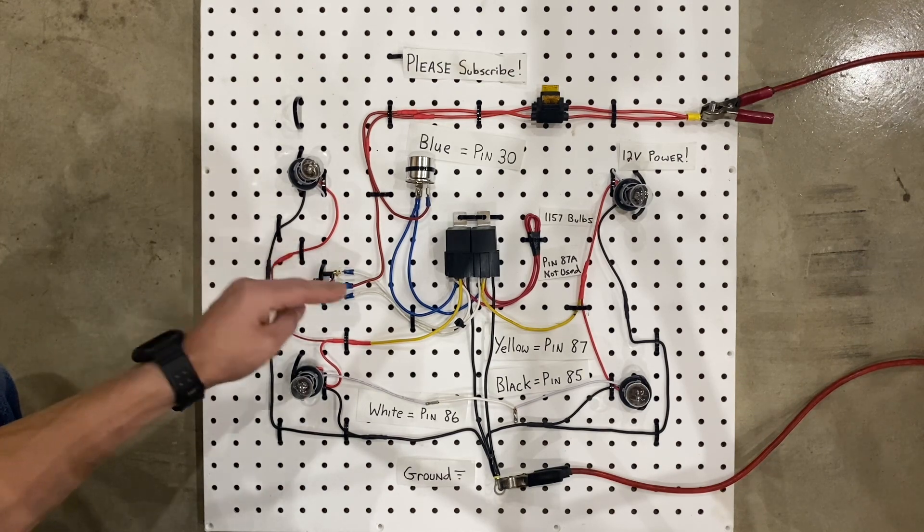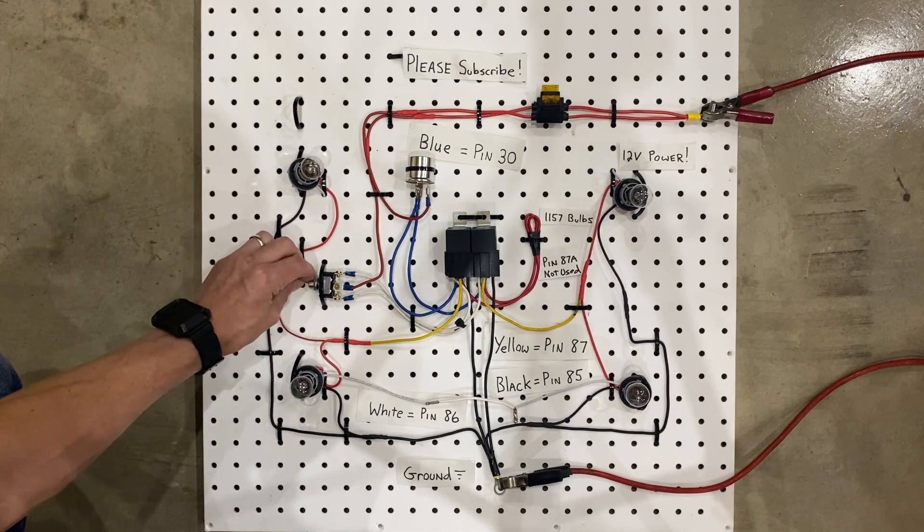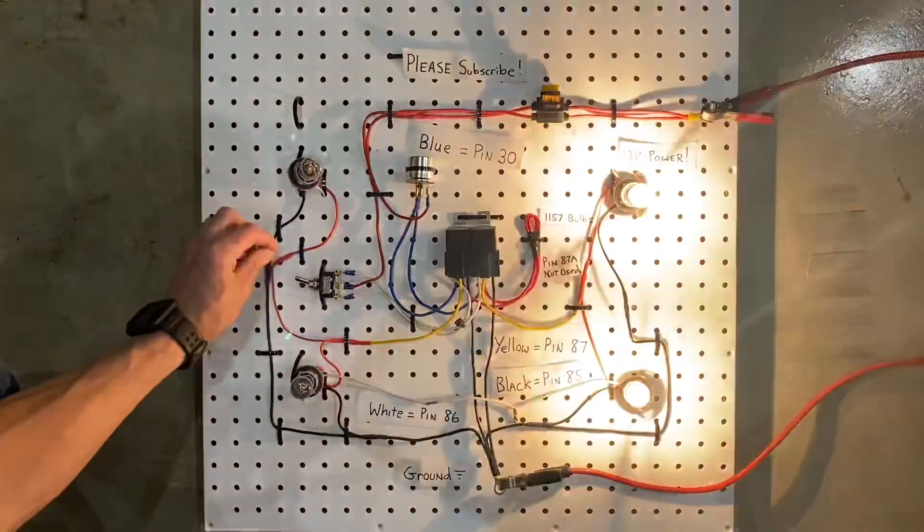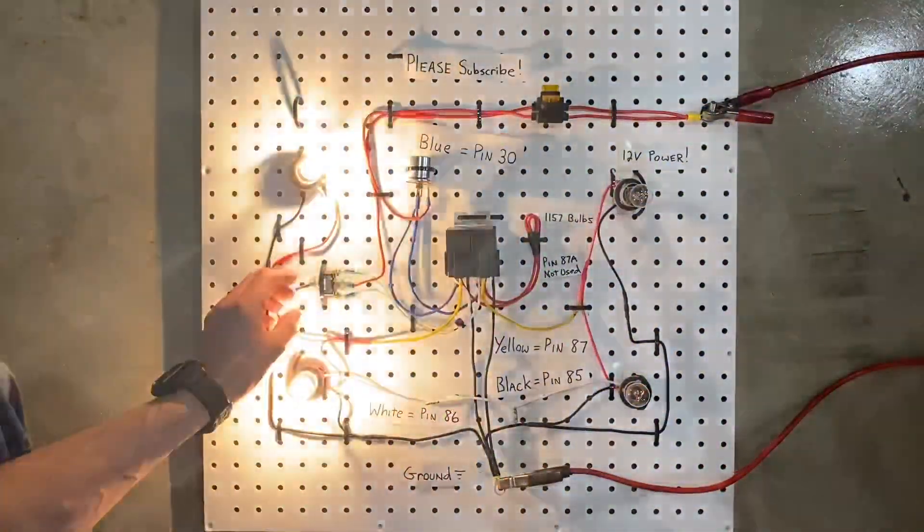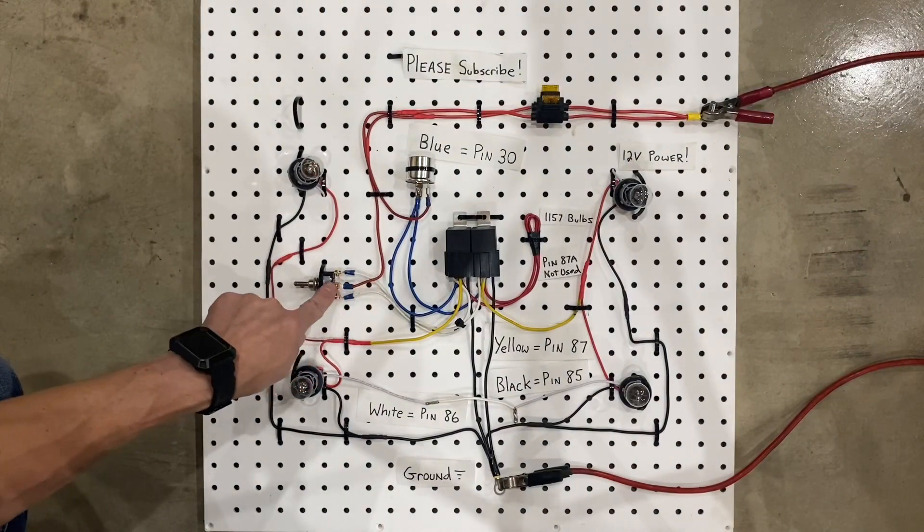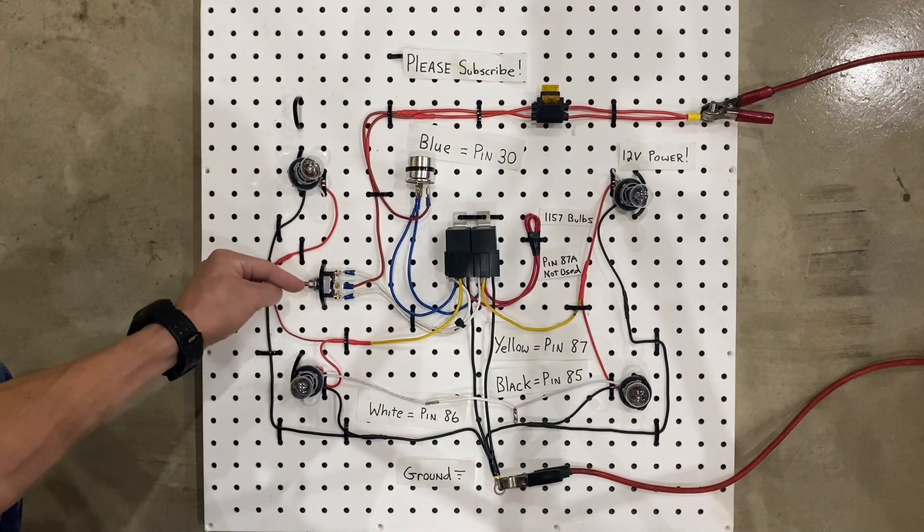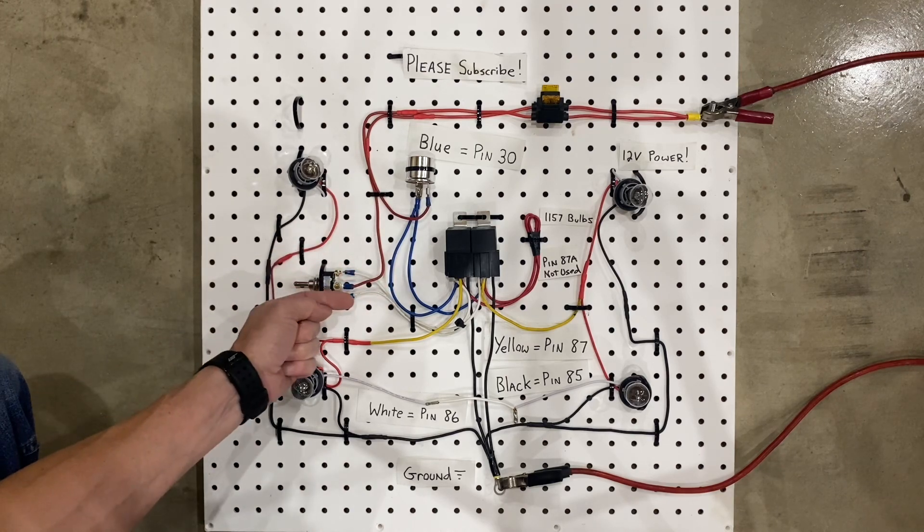This switch has no power going through it when it's straight up and down. But if you flick it in one direction, it stays there, and it turns on one directional. If you flick it in the other, it stays, and it turns on the other. And what that actually does is it has power coming in the center, and then depending on which way you turn it, it sends power out this wire, or it sends power out that wire.